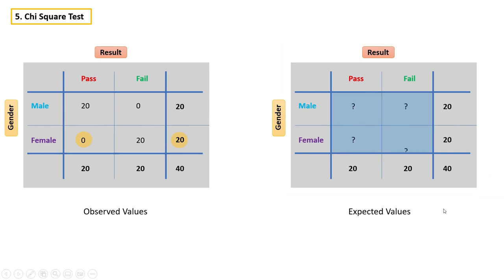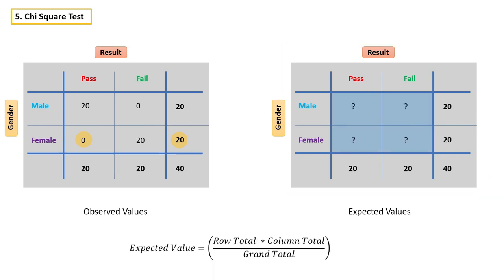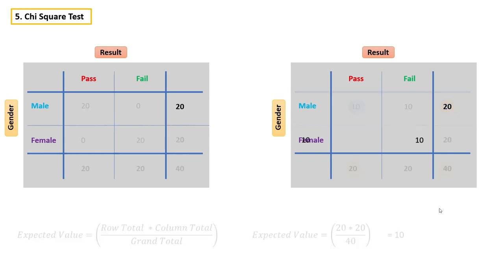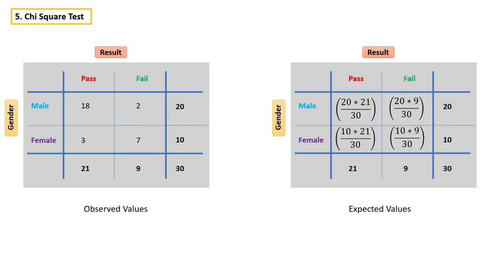But how do we calculate these expected values? There is a trick: if you multiply the row total by the column total and divide it by the grand total, you will get the expected values. For example, this value can be obtained by multiplying its row total by column total and dividing by grand total. Now let's go back to our actual problem and calculate expected values — in this case, these are the expected values.